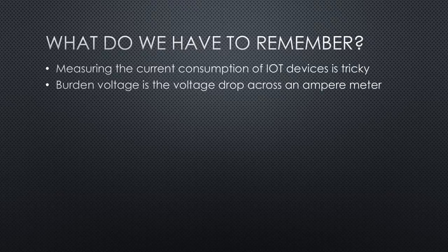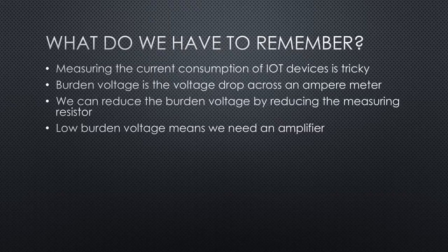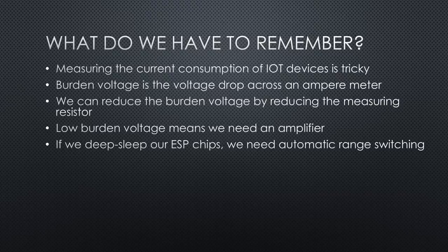What do we have to remember? Measuring the current consumption of IoT devices is tricky. Burden voltage is the voltage drop across an ampere meter. It has to be small if we do not want to crash the devices. We can reduce the Burden voltage by reducing the measuring resistor value. Low Burden voltage means we need an amplifier. If we deep sleep our ESP chips, we have to measure from a few microamperes to 500 mA.